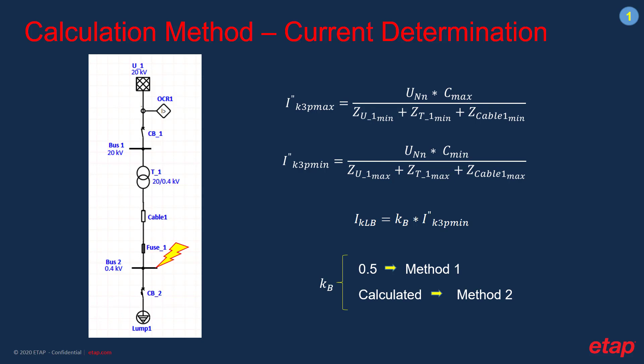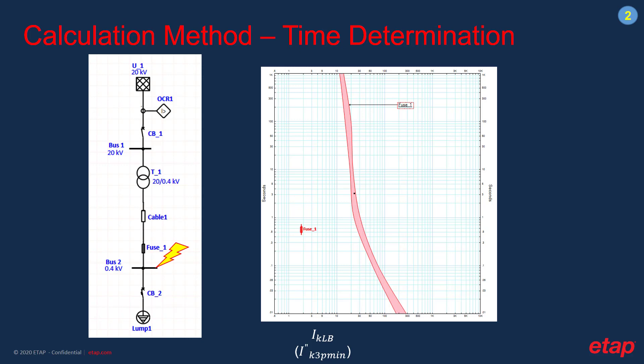This factor is different depending on the method being used. Since method one is based on worst-case approximations, Kb is equal to 0.5 for low voltage applications. Whereas for the second method, this factor is calculated considering the electric arc characteristics. Once we have the arc current, we can find the fault clearing time going through the TCC curve of the protective device installed to protect the work location. This will be considered as the exposure time of the electrical worker to the arc flash. The arcing current is determined based on the minimum fault current, since this would result in a longer exposure time, and therefore a higher arc energy due to the direct relationship between energy and time. The maximum current, on the other hand, is used for the energy determination.